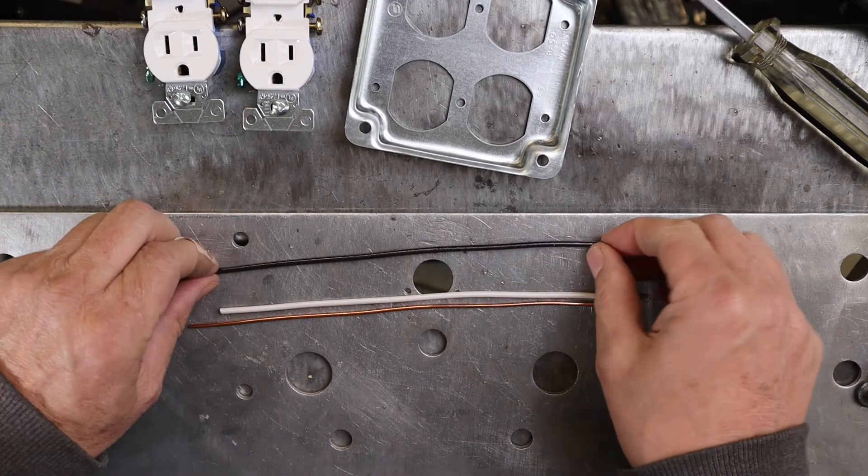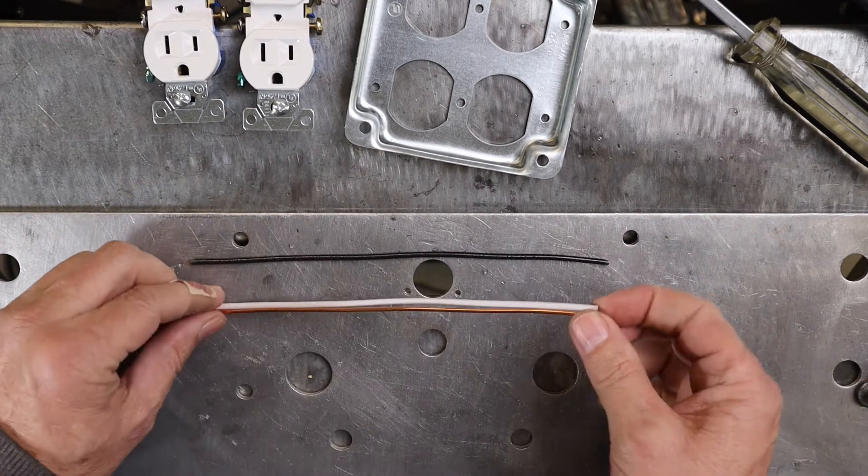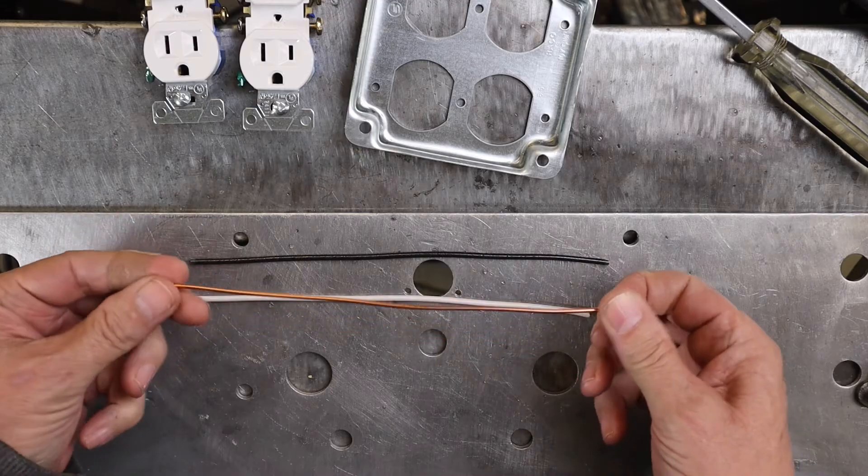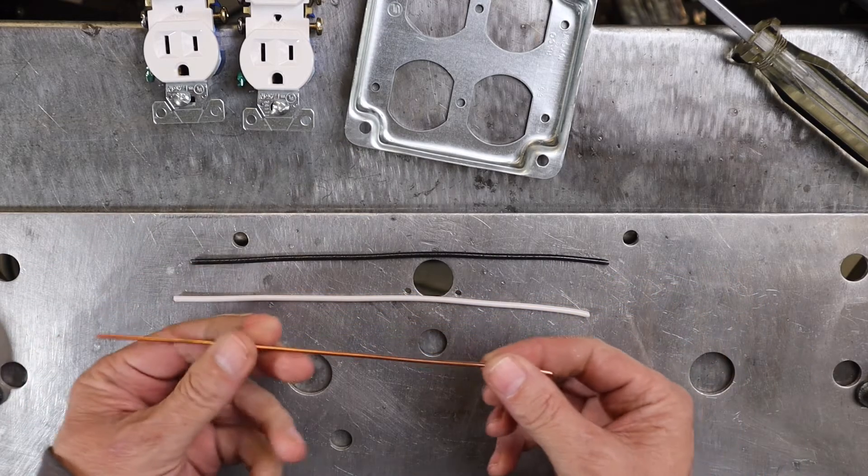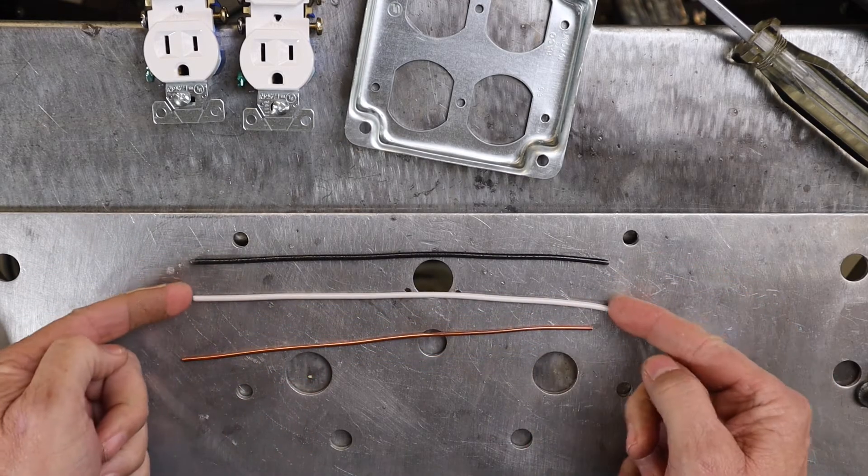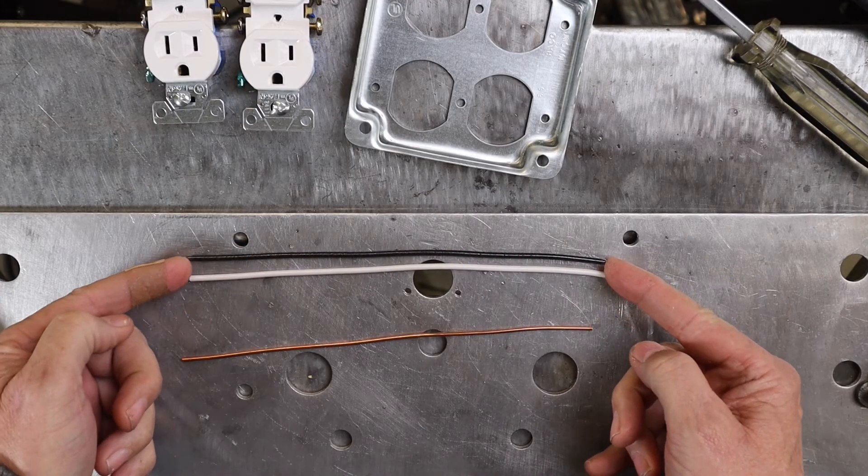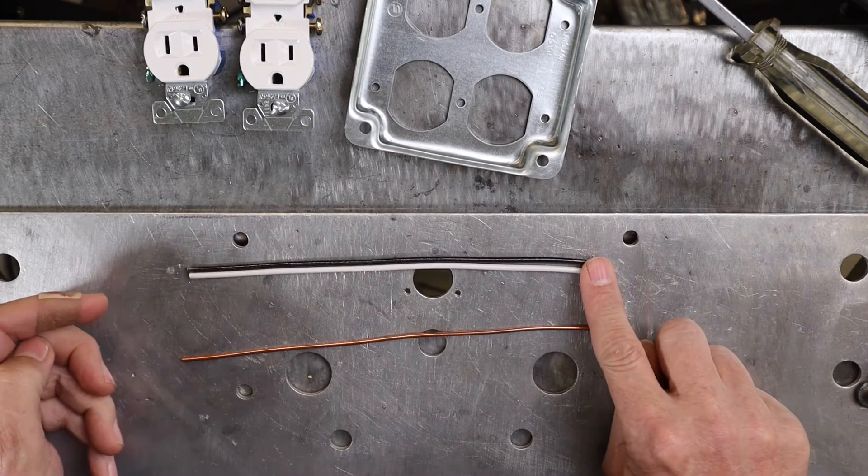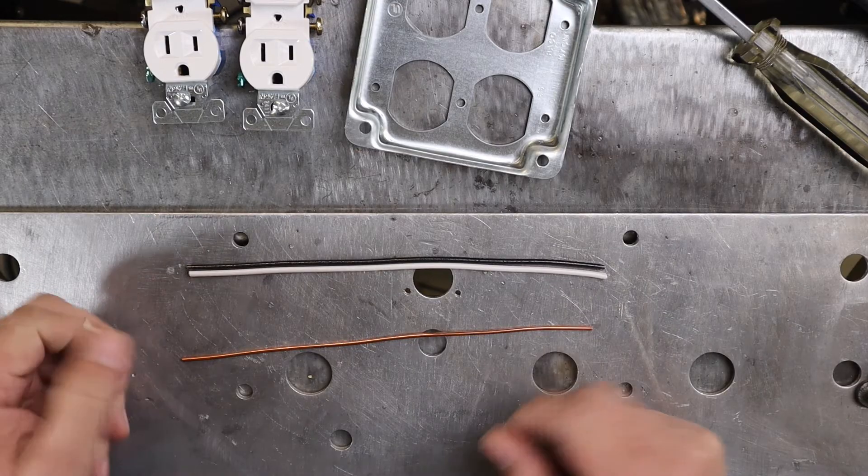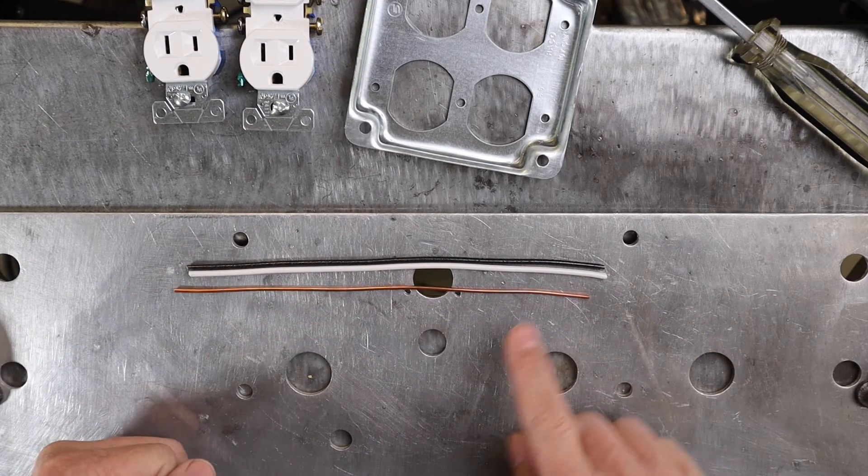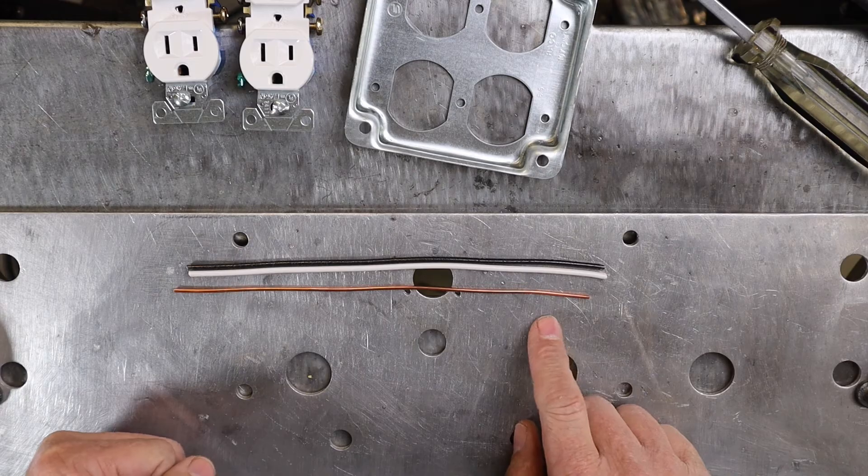So the black is the hot, the white is the neutral, and the copper is the ground. What I'm going to do is strip both ends of the white and the black. One end will get a hook and the other end will just be a straight piece, and I'll put a hook on one end of the copper.